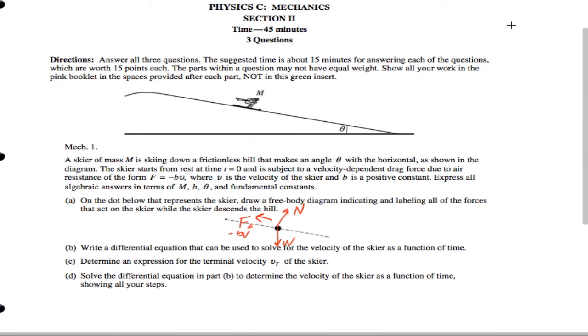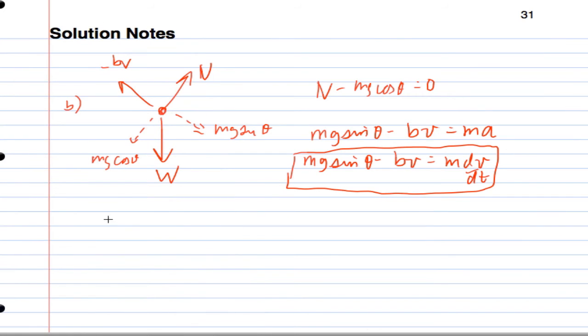Now, it's just a terminal expression for the terminal velocity of the skier. That's part C. So for part C, again, we remember that at terminal velocity, A equals zero.